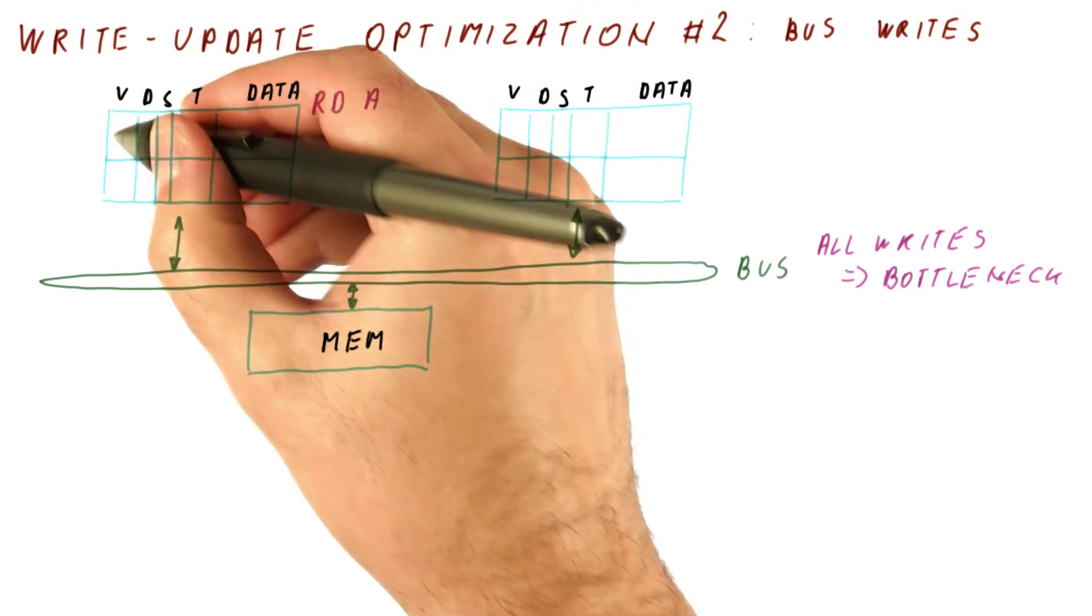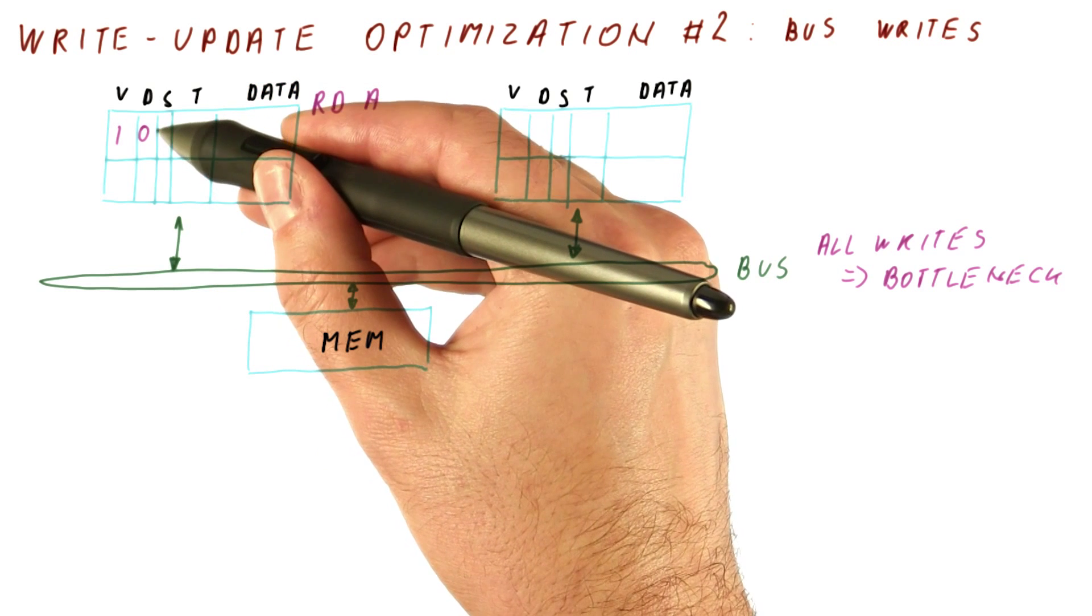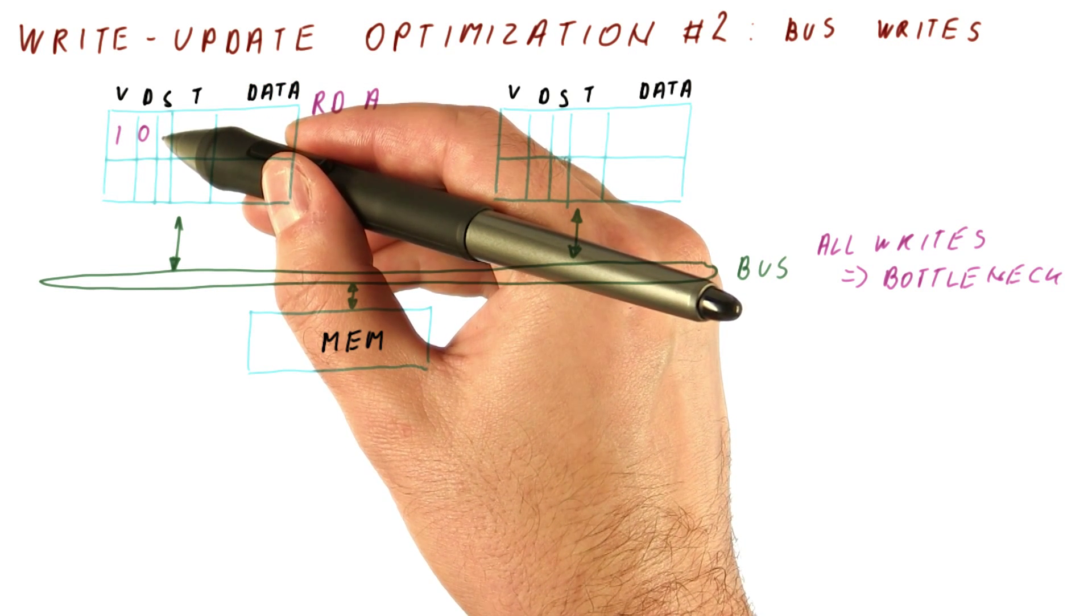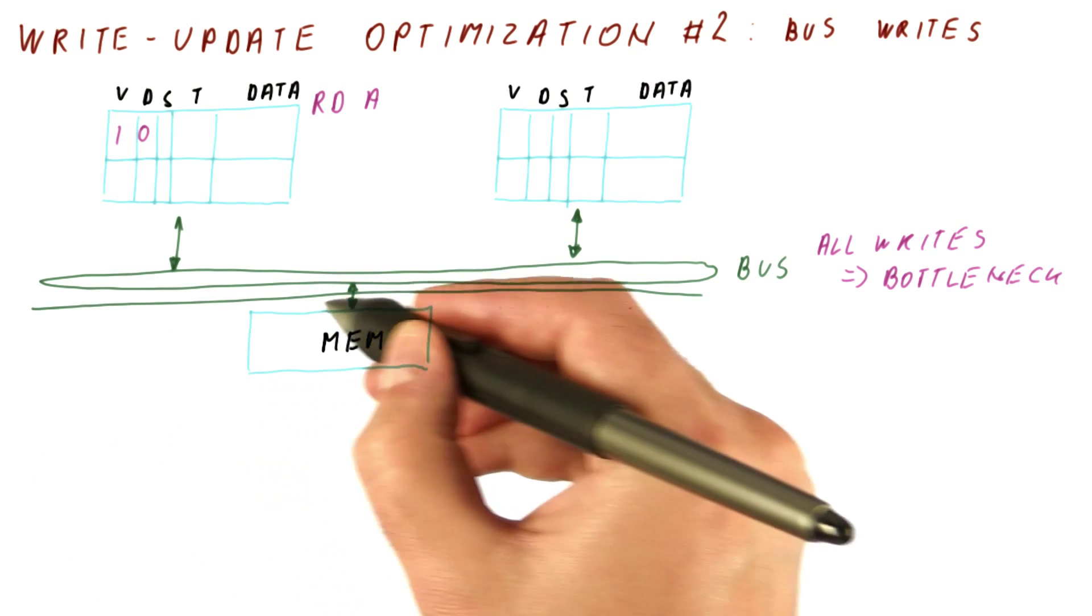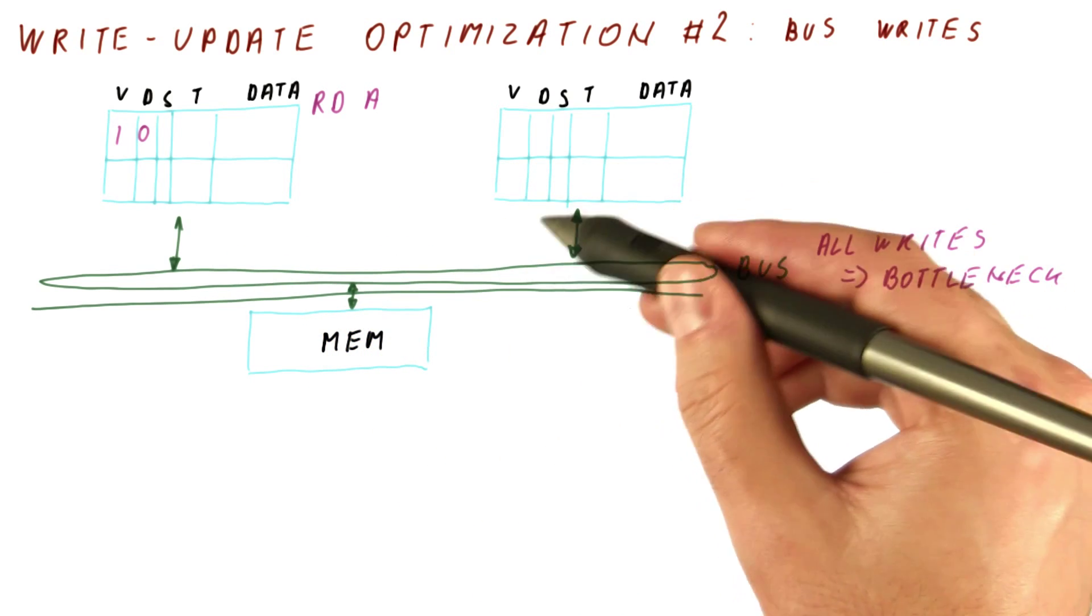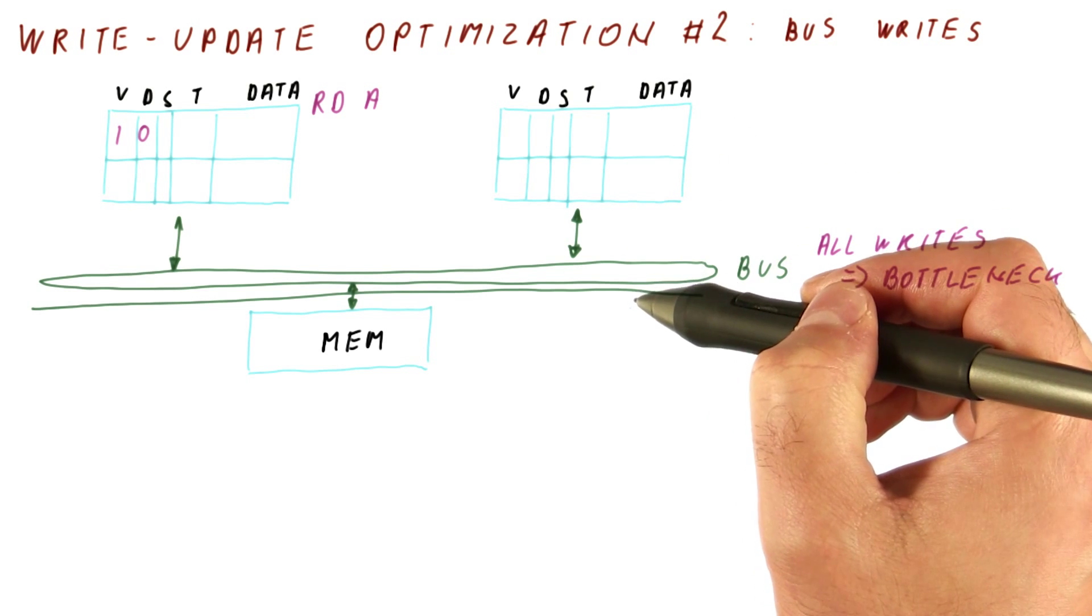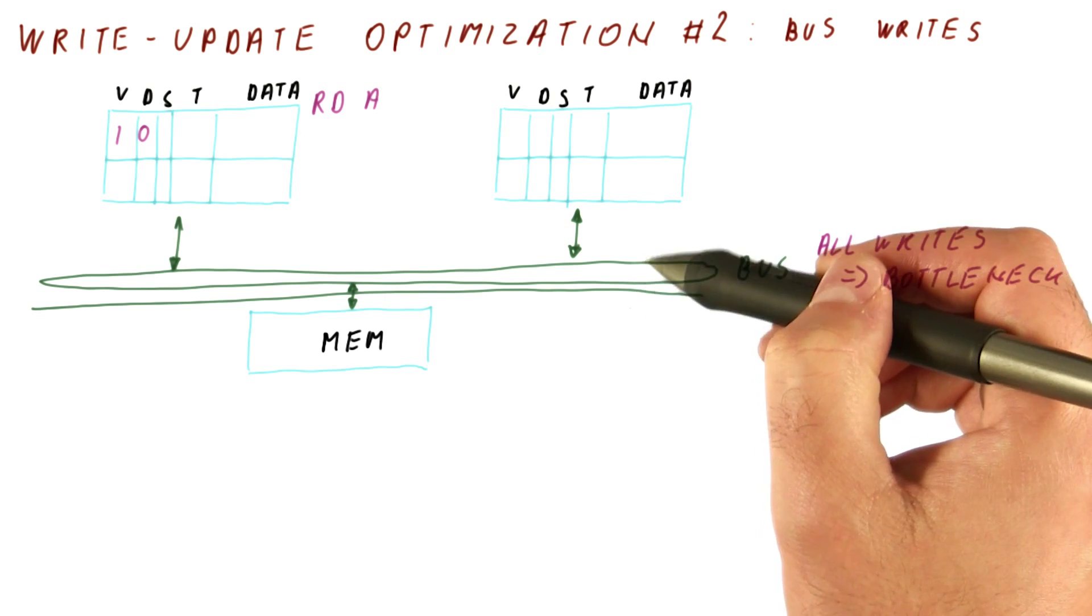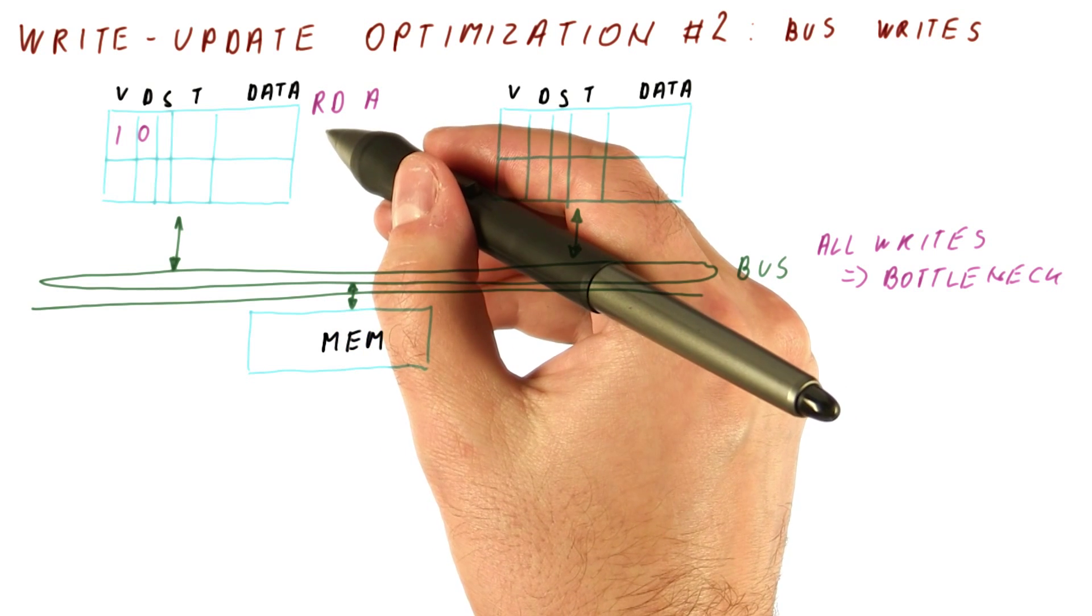Suppose we read A here. We get this valid, not dirty. But for the shared bit we need to know whether others also have this block or not. For this purpose, we add a line to the bus. When a read goes to memory, others snoop this read. And if they have that same block in the cache, then they pull the shared line to 1. If nobody pulls the shared line to 1, then it will remain at 0. So for this particular block,